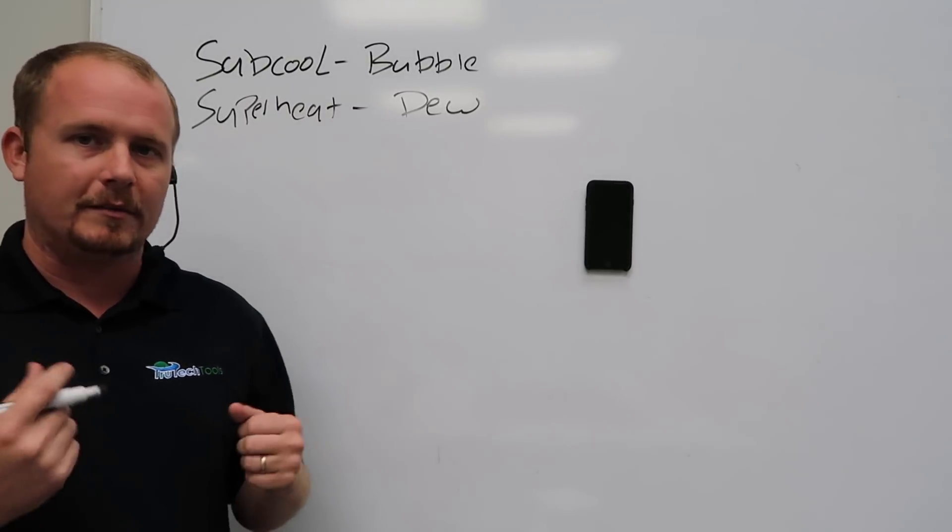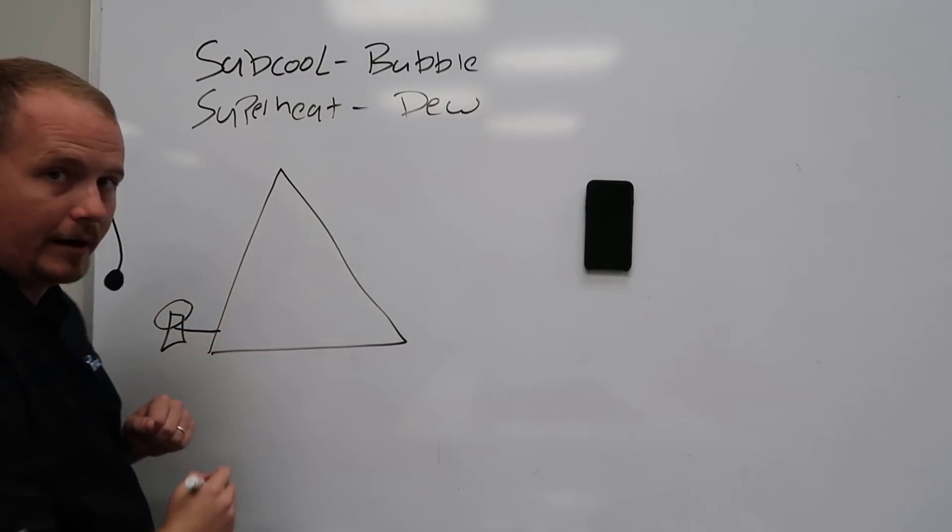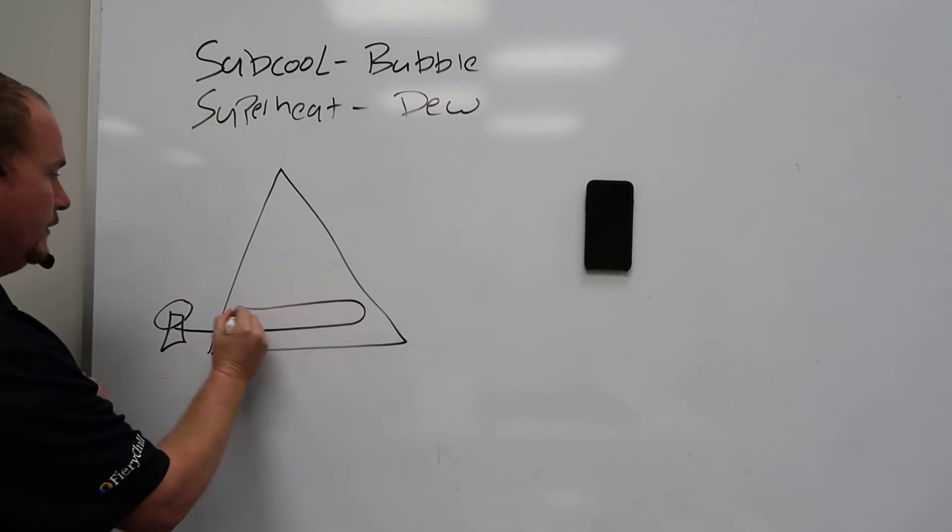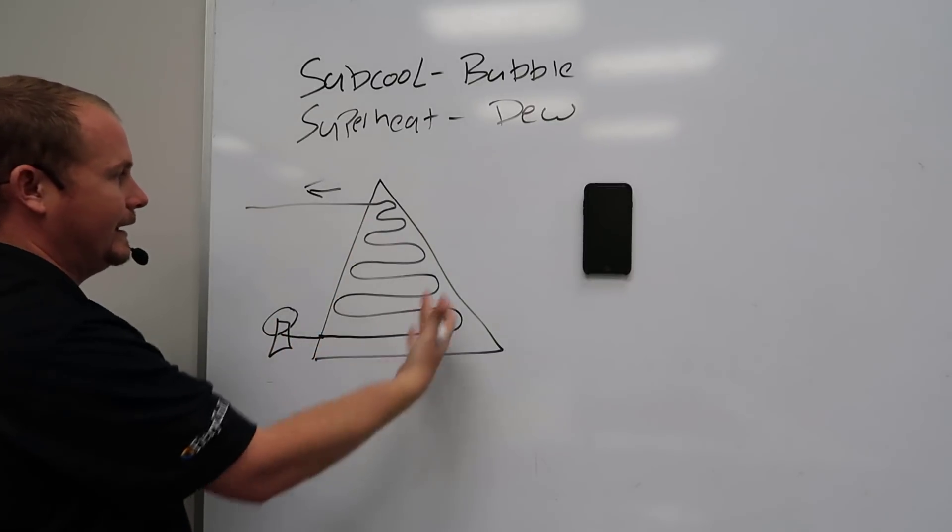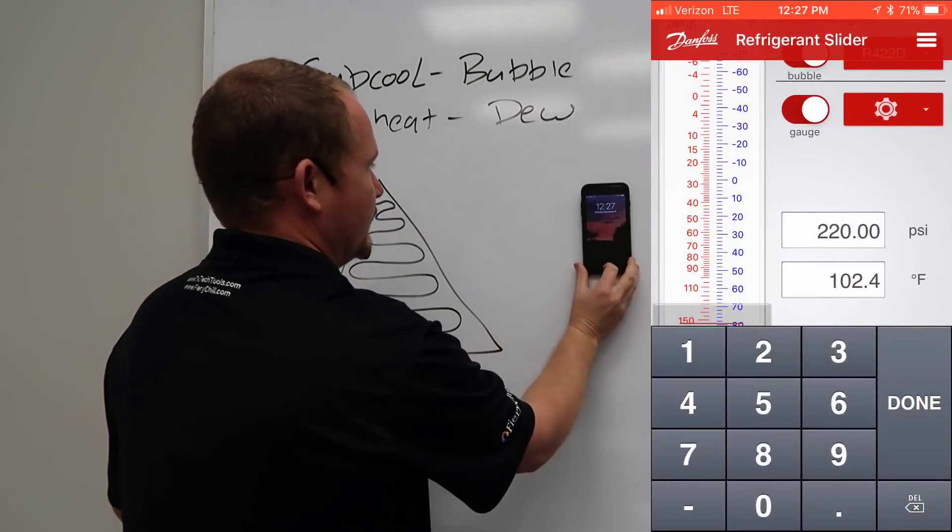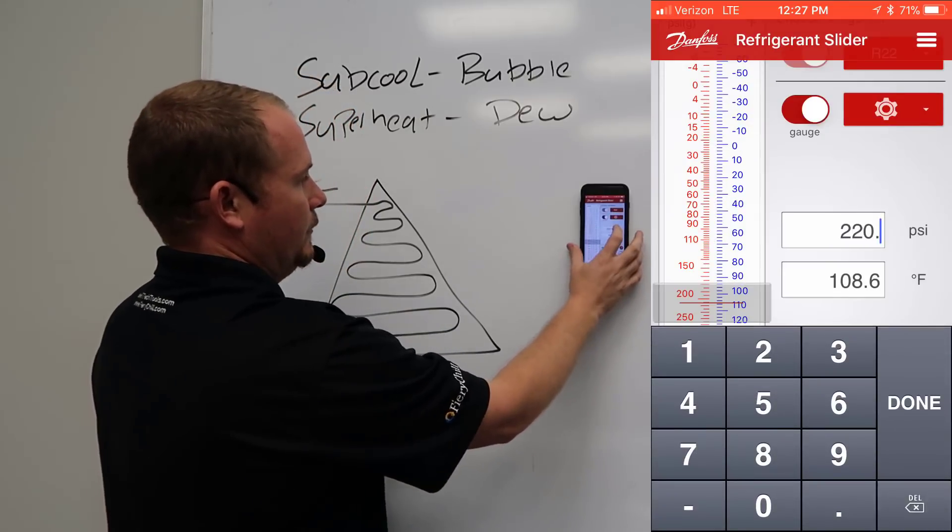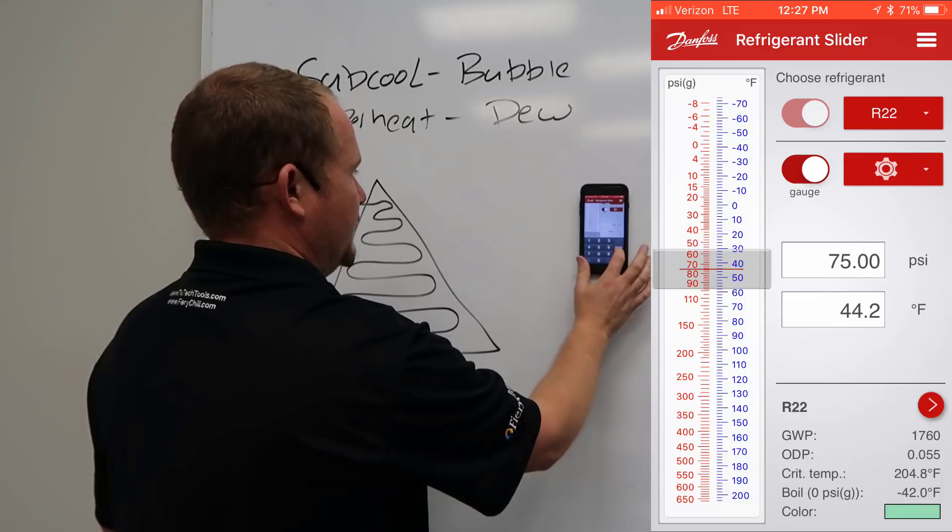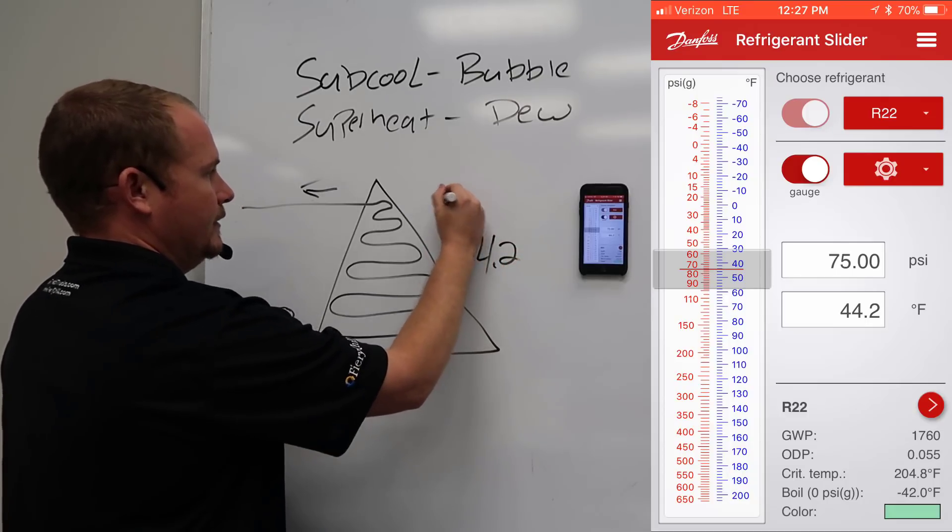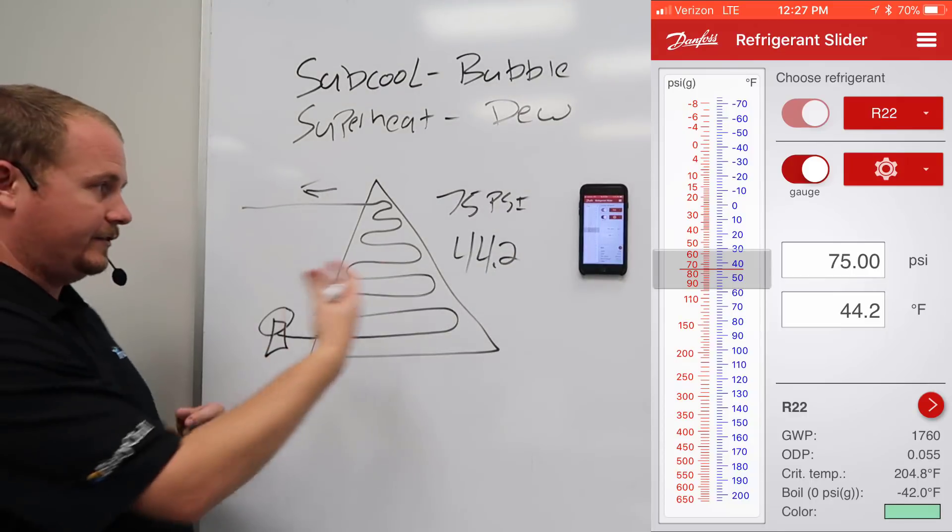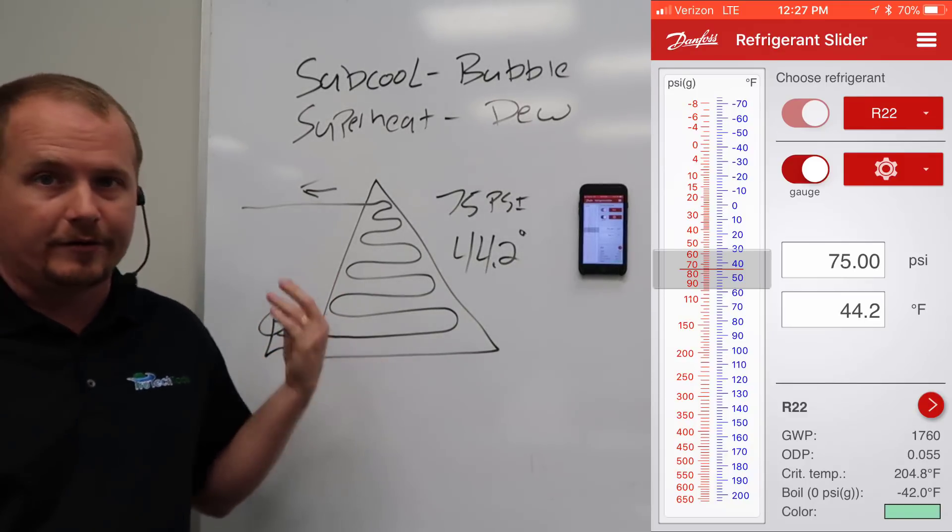But we do more things with refrigerant and readings than just superheat and subcooling. If you imagine an evaporator coil with an expansion valve feeding refrigerant into the bottom, and the refrigerant travels through, we would generally assign a temperature to this based on the saturation temperature. We would say at a given pressure it has a given temperature. Let's use the refrigerant slider app here. We'll take a traditional refrigerant like R22, and go with a typical pressure that we would see, which would be 75 psi. That's a 44.2 degree evaporator temperature. So we would say 44.2 at 75 psi, that's the temperature at which the refrigerant is boiling as it goes through that evaporator. We would call that the boiling temperature or the evaporator temperature.